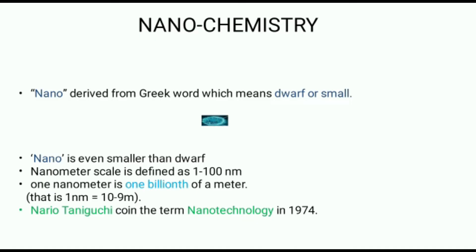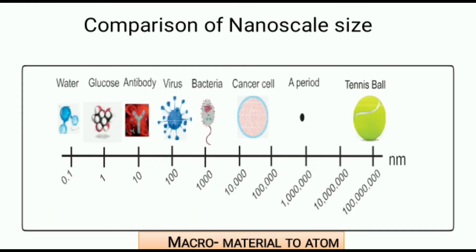Norio Taniguchi coined the term nanotechnology in 1974. The idea and concept behind nanoscience and nanotechnology started with a talk titled 'There is Plenty of Room at the Bottom' on 29 December 1959 by physicist Richard Feynman. The concept started from that lecture.